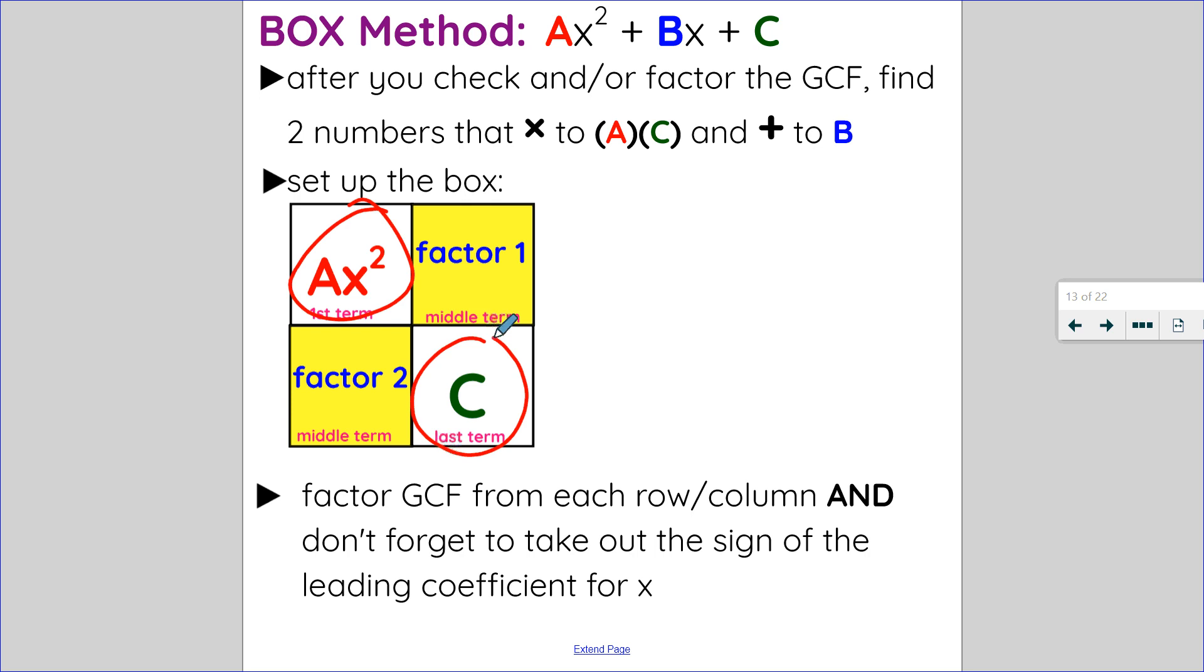Once I've done that, I factor the GCF from each row and column, and don't forget to take the sign of the leading coefficient of x out. So if x is positive, I take out a plus. If x is negative, I take out a subtract.